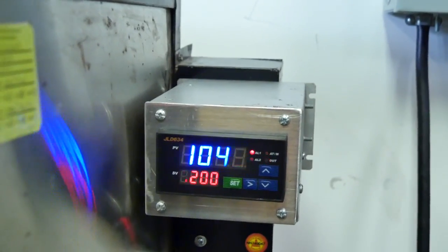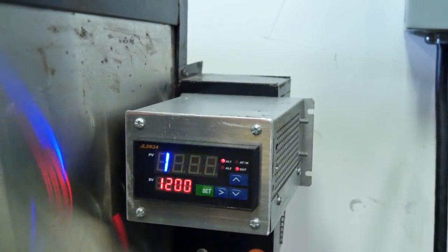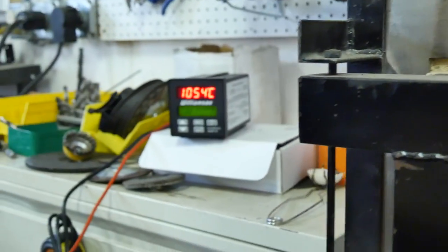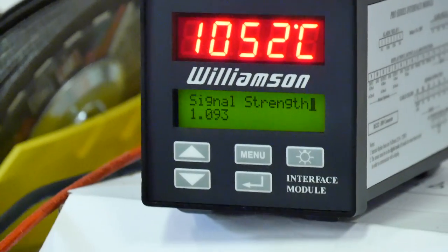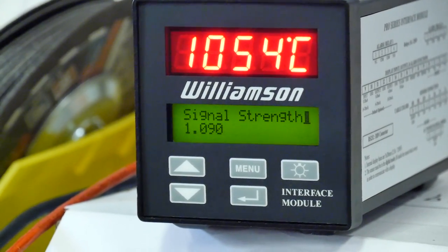So that makes a huge difference. The K-type thermocouple, which is presenting the temperature here, is saying 1047, and over here the Williamson is reading 1052. So ballpark in the same range.